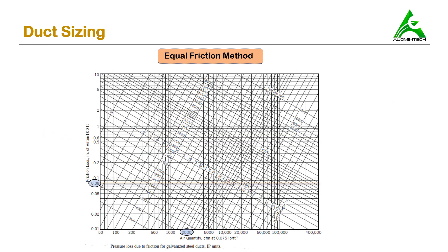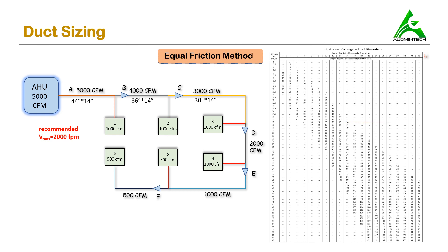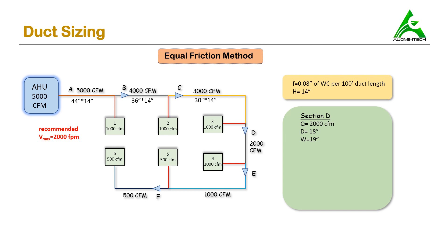For section D, the volume flow rate is 2000 CFM. Drawing lines on the chart, the equivalent diameter is approximately 18 inches. From the conversion chart, 18 inch diameter with 14 inch height gives a width of 19 inches. However, since odd-number dimensions are generally not available, we round up to 20 inches. The duct dimensions for section D are 20 inches by 14 inches. The aspect ratio is 1.42, which is less than 4, so it is accepted.